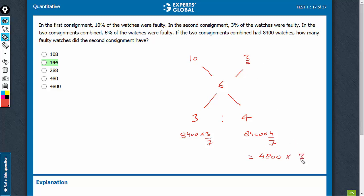So the answer is going to be 4800 × 3 ÷ 100, that is 144.